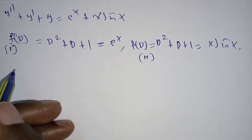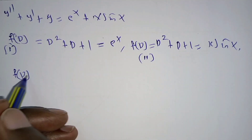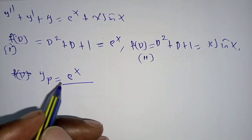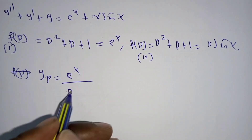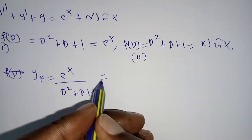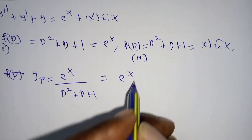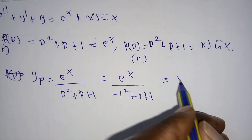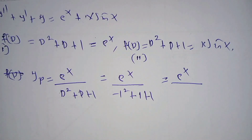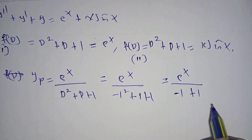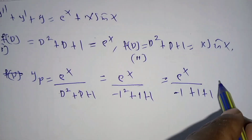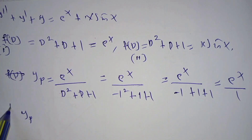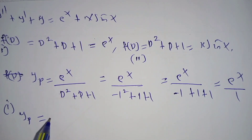Starting with part 1: Y_p1 = e^x / (D² + D + 1) = e^x / (1² + 1 + 1) = e^x / (1 + 1 + 1) = e^x / 1. So Y particular part 1 equals e^x.